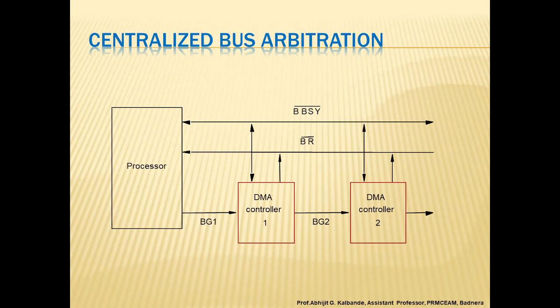In this case, the processor is normally the bus master unless it grants bus membership to one of the DMA controllers. A DMA controller indicates that it needs to become the bus master by activating the bus request line, denoted as BR bar. The signal on the bus request line is the logical OR of the bus requests from all devices connected to it. When the bus request is activated, the processor activates the bus grant signal BG1, indicating that the DMA controllers may use the bus when it becomes free.